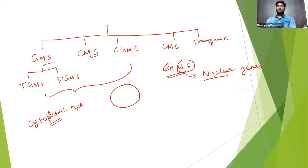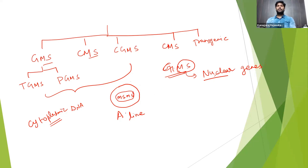So this is the male sterile parent. The nuclear gene contains MS MS — both alleles recessive — and this is called the A-line. The A-line is called the male sterile line, and this is the genetic constitution of the A-line.